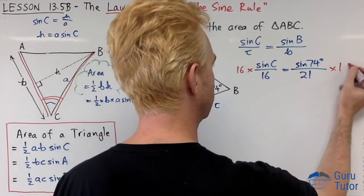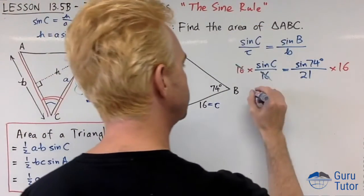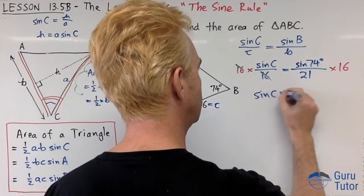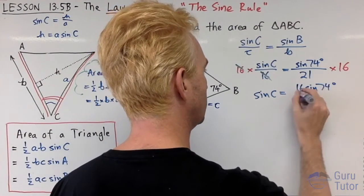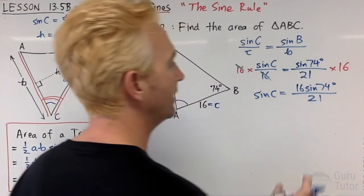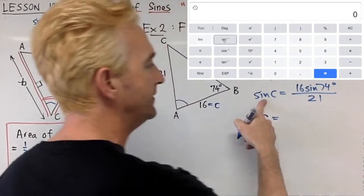We're going to get rid of 16, do that to both sides. 16 cancels with 16 leaving us with sine C equals 16 sine 74 degrees all over 21.